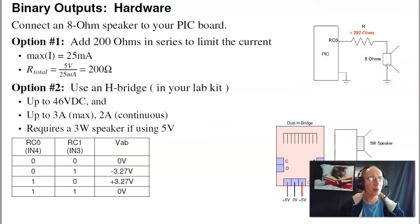If you want more power, then use a buffer, like a transistor or an H-bridge. There should be an H-bridge in your kits. This is capable of up to 46 volts DC and 3 amps, and very easy to interface. You just need to give it power and ground.